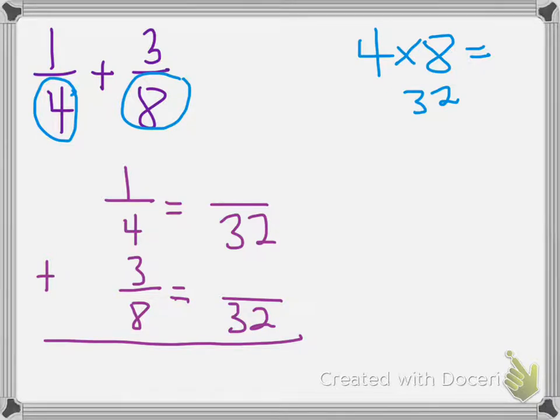So in one-fourth, we're going to focus our attention on the four in the denominator. And we're going to ask ourselves, what times four in the denominator gives us a 32? And luckily, I still have four times eight equals 32 written in the top right-hand corner. So that tells us really quickly that four times eight gives us 32.